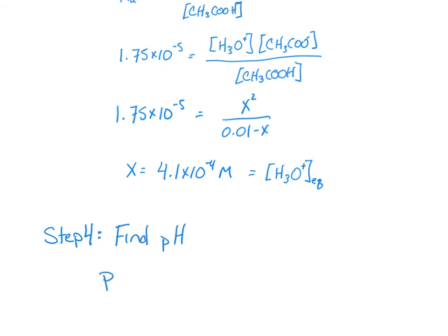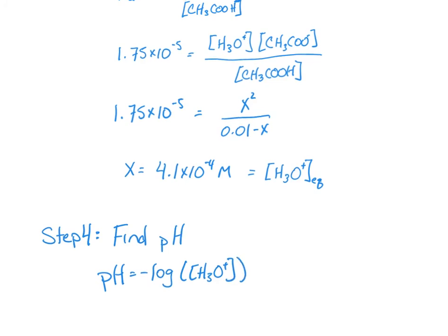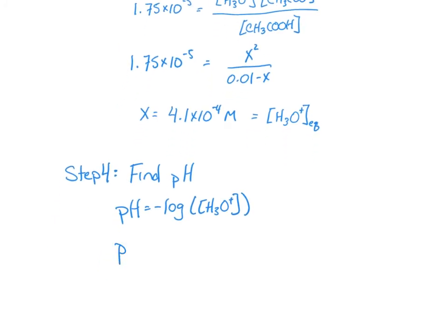And so we know that pH is equal to minus log of the concentration of H3O+. And so for this example, pH is equal to minus log of 4.1 times 10 to the minus 4, which is equal to 3.4.